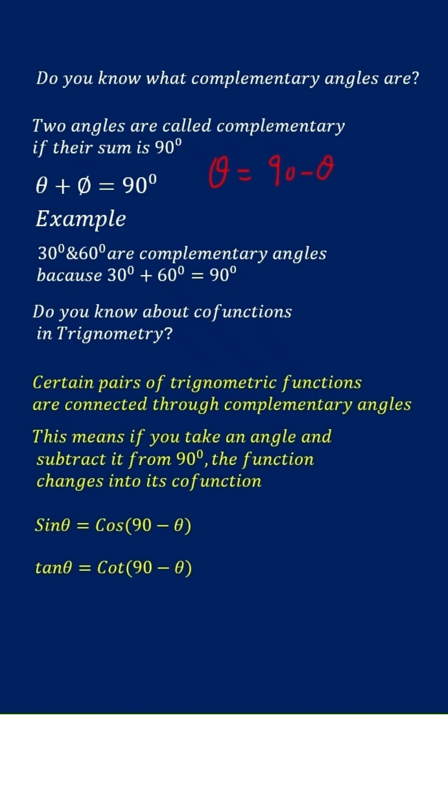Suppose one angle is 30, then 90 minus 30 will be equal to 60. So 30 and 60 both are complementary angles.